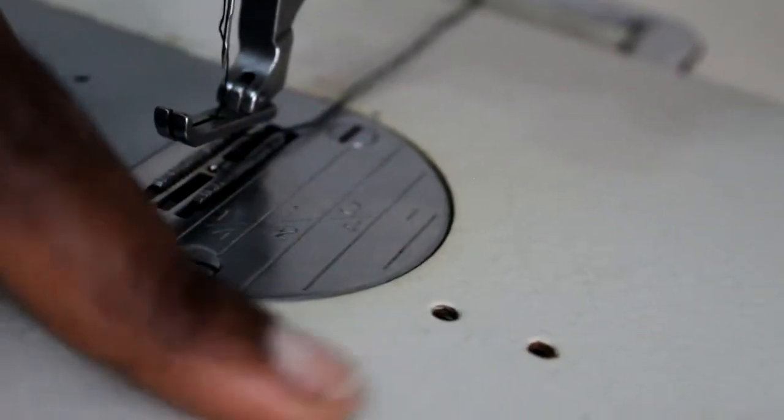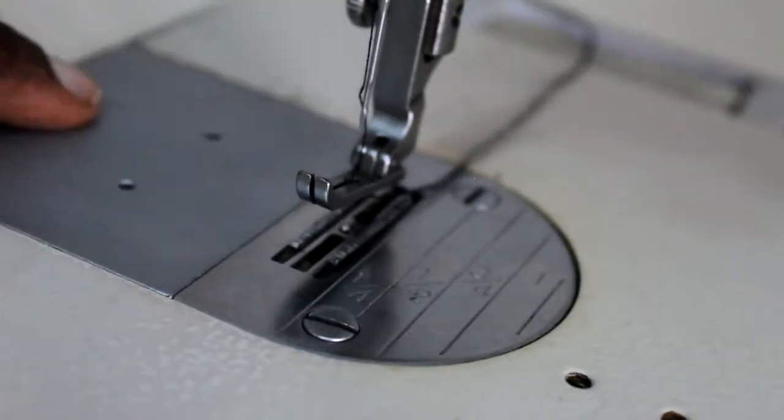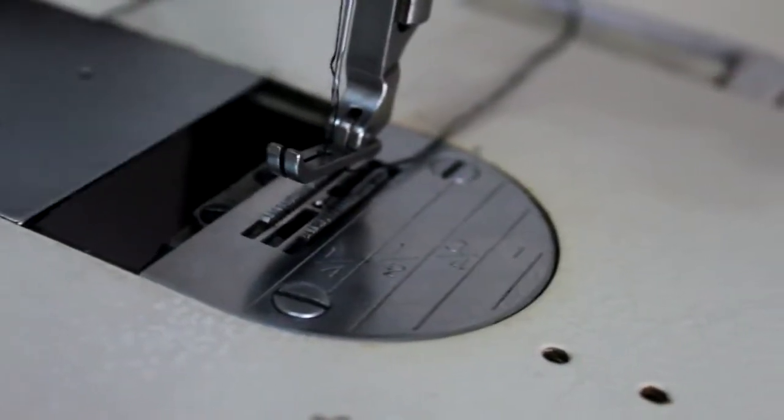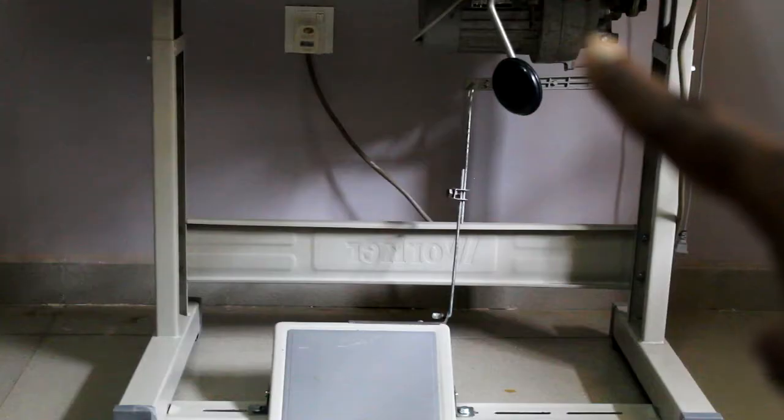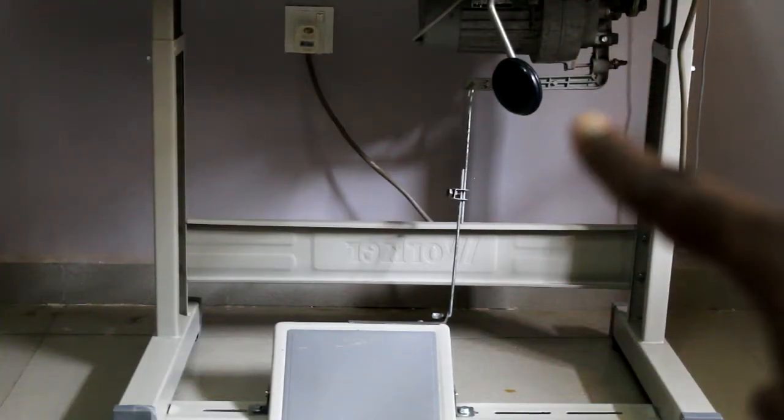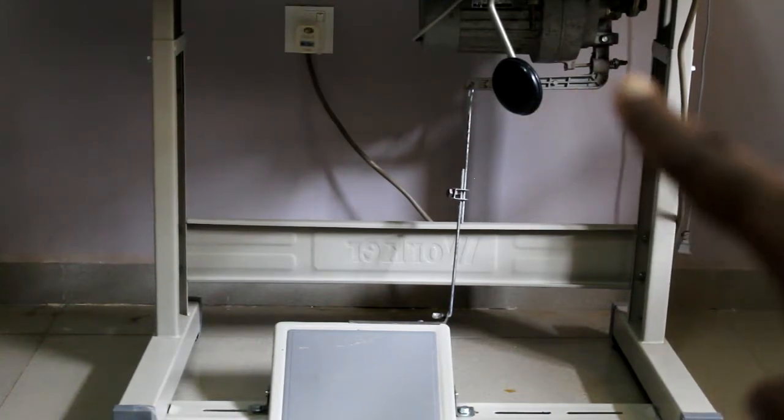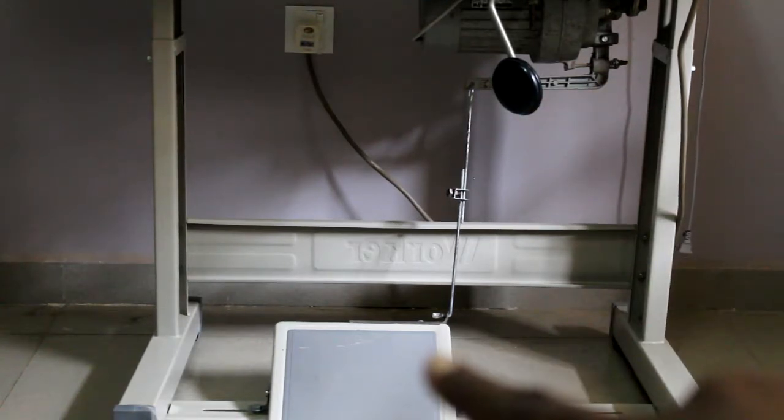Here we have these little holes to attach some accessories or attachments. Here is your bedside, underneath there is the bobbin. You have the clutch motor. You have your knee lifter pad for taking the presser foot up and down, and finally your foot pedal. And all this is attached to a table.